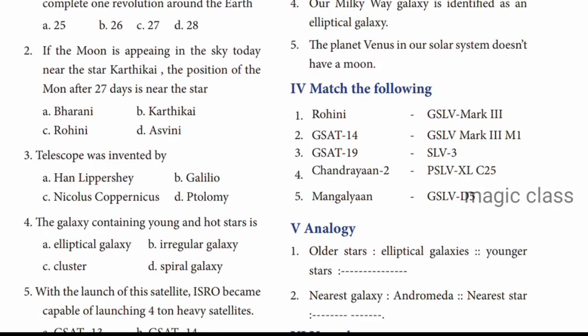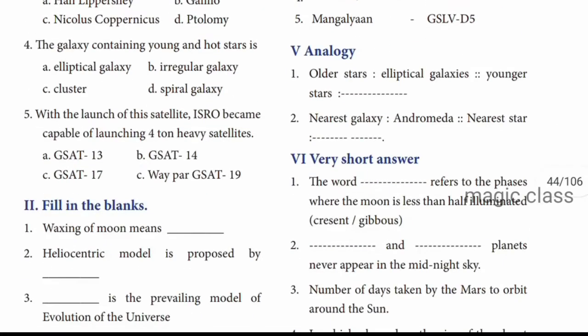Next is match the following. Rohini - answer is SLV3. GSAT14 - answer is GSLV-D5. GSAT19 - answer is GSLV-D1. Chandrayaan 2 - answer is GSLV Mark 3. And finally, Mangalyaan - answer is PSLV-XL C25. This is very important. Satellites launched into elliptical orbit - elliptical galaxies. Younger stars - irregular galaxies. Nearest galaxy - Andromeda. Nearest star (after the sun) - Alpha Centauri.